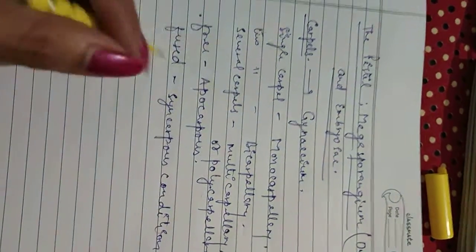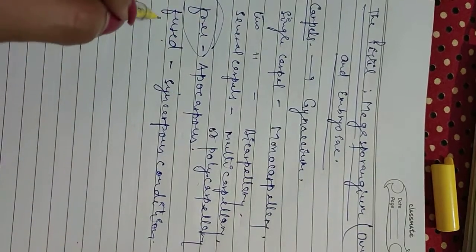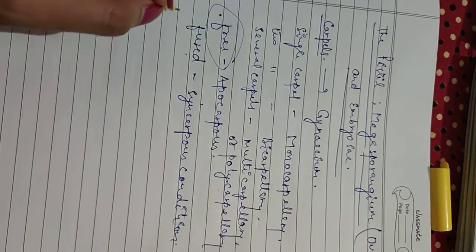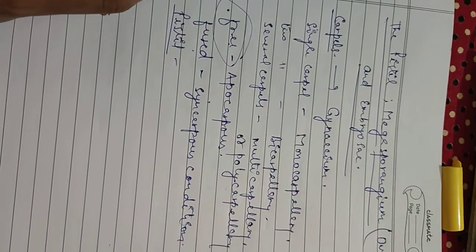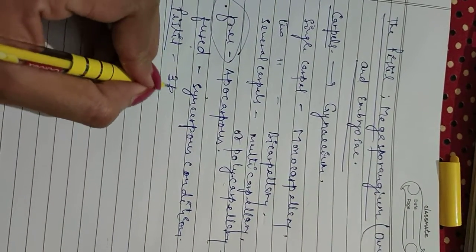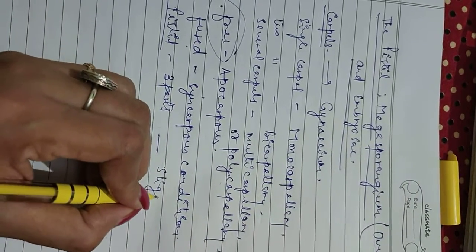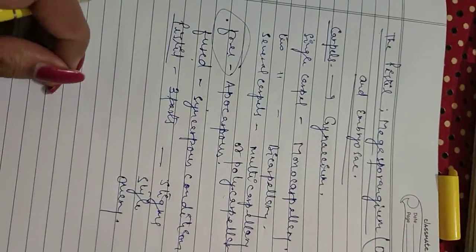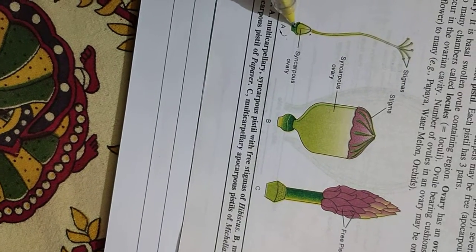When more than one carpel is present, they may be free or fused. When carpels are free it is known as the apocarpous condition, and when fused it is known as the syncarpous condition. The free unit of gynoecium is called the pistil. Each pistil has three parts: stigma, style, and ovary — as you can see here in the diagram.